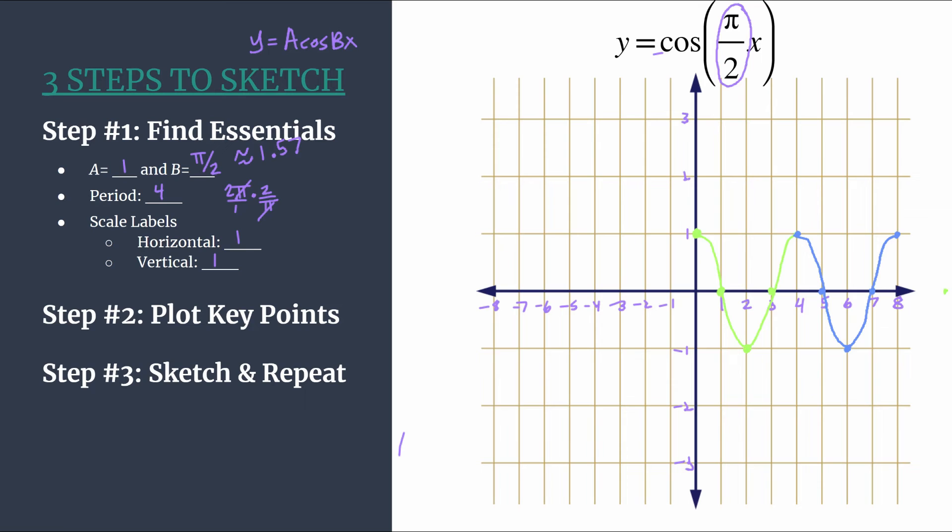So we follow that same pattern. Max, zero, min, zero. Repeat. Let's sketch that cycle in. I'll try to do it a little bit neater. And let's sketch a couple on the other side of the y-axis. So make sure that your key points are four. That's your pattern. So you should be a multiple of four away from the green cycle that you've drawn. So we'll start with a maximum at negative eight, one, a zero, a minimum, a zero, a maximum, a zero, a minimum, a zero. You are just repeating that pattern over and over again until you have as many cycles as you want.